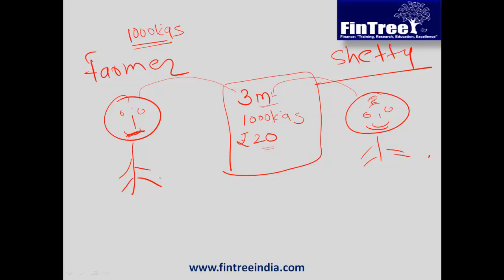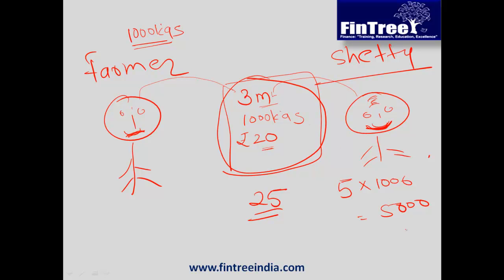Let us assume a scenario where the price actually turned out to be rupees 25 per kg. Mr. Shetty is suddenly very happy because he would say the market price is 25 — had this contract not existed, I would have paid 25 per kg, but using this contract I can buy potatoes at only rupees 20 per kg. My benefit is rupees 5 per kg into 1000 kgs, equal to rupees 5000. This piece of paper is now worth 5000 because the price of potatoes in the market is 25 — it has derived a value of 5000.